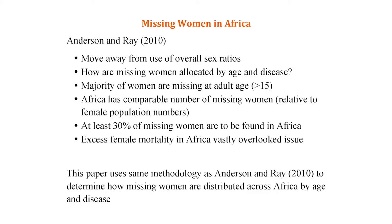That was the first big finding: the majority are actually older than 15. Secondly, a completely overlooked issue was that a huge chunk of them are actually found in Africa, which was completely overlooked. Relative to the actual female population numbers there, it's actually very large — at least 30% of the missing women were found in Africa.